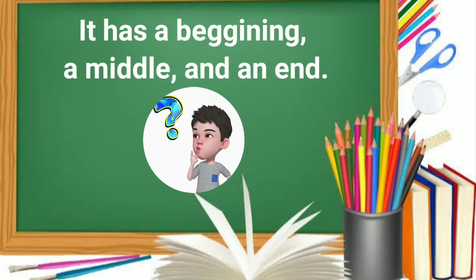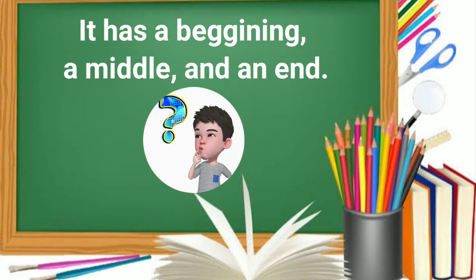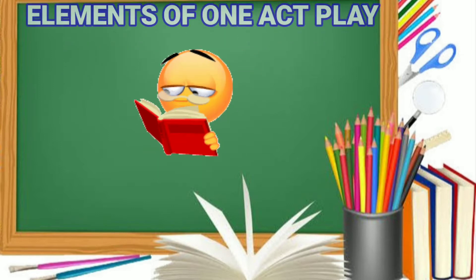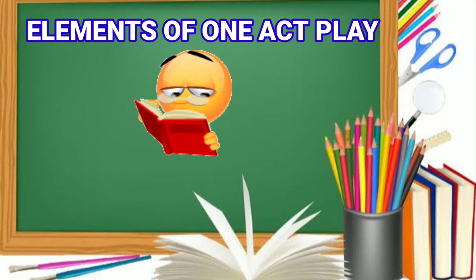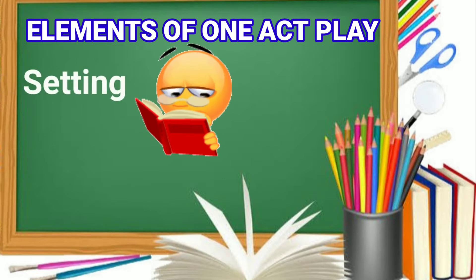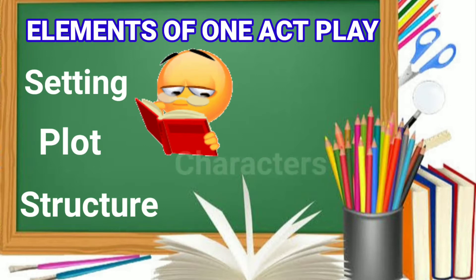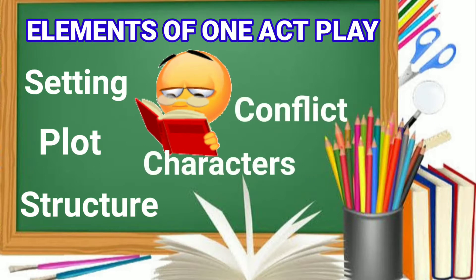Like any other fiction, a one-act play has also its beginning, the middle, and the end. At this point, let's talk about the elements of a one-act play. It has a setting, a plot, a structure, characters, conflict, and a theme.